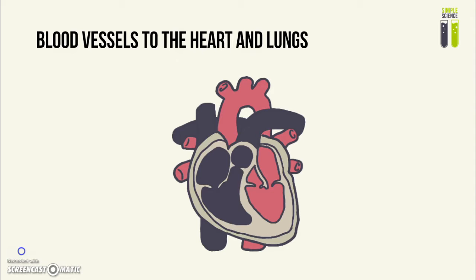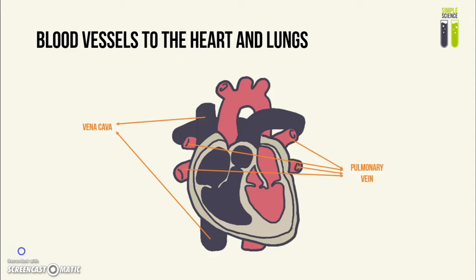Now we have to mention the blood vessels to the heart and the lungs. The vena cava takes blood towards the heart. The pulmonary vein also takes blood towards the heart, but it comes from the lungs. The aorta takes blood away from the heart, and the pulmonary artery takes blood away from the heart but towards the lungs.